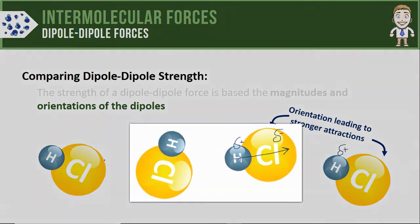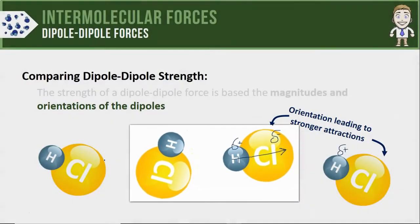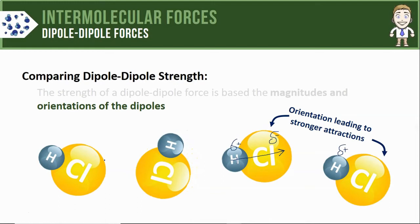On the middle two molecules however the partially positive hydrogen is not directed towards the partially negative chlorine so those two molecules might experience some attraction but it's likely to be much weaker than the other.